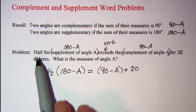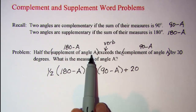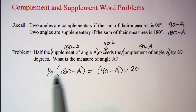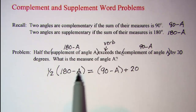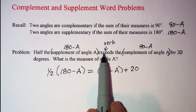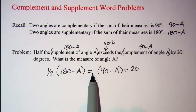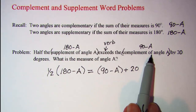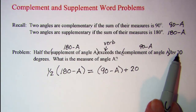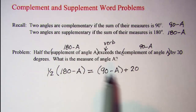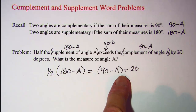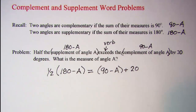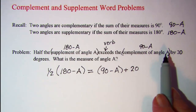Let's review. We have half the supplement, so one half times the supplement. Our verb is exceeds, that's where the equals sign goes. If the left side exceeds the right side by 20, that means I have to add 20 to the right side to keep it equal. And then our complement is 90 minus A.